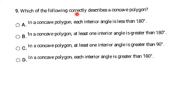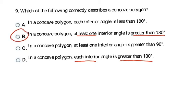Number nine: which of the following correctly describes a concave polygon? I just have to know the definition. A concave polygon has an angle greater than 180 degrees. Two answer choices say greater than 180 degrees, but one says 'at least one interior angle' and the other says 'each interior angle.' According to the definition, it doesn't have to be each interior angle — so the answer is B.